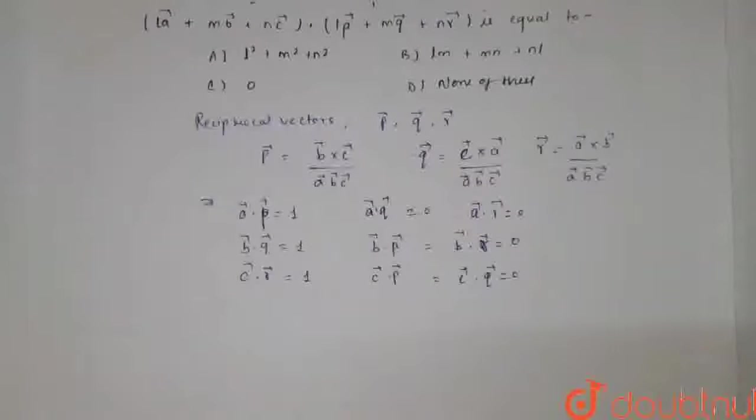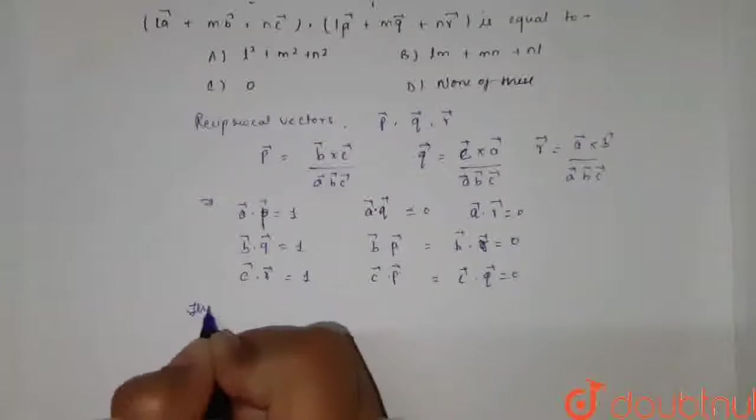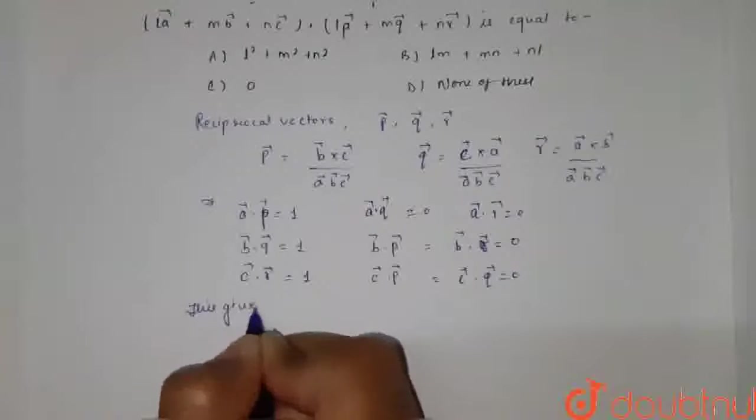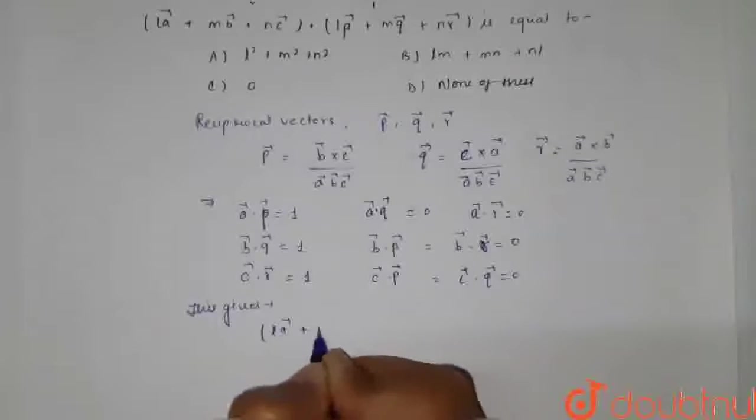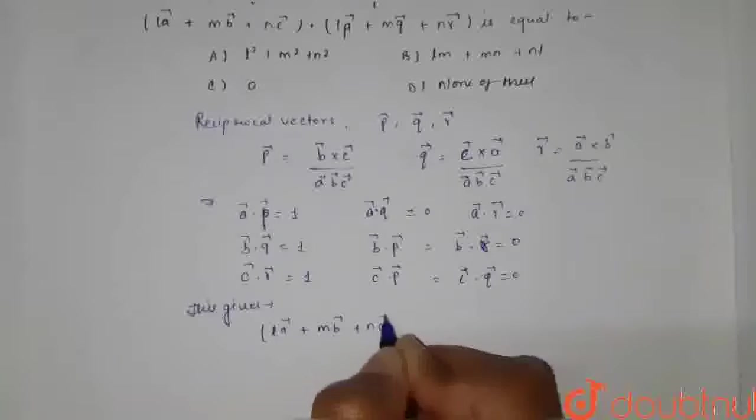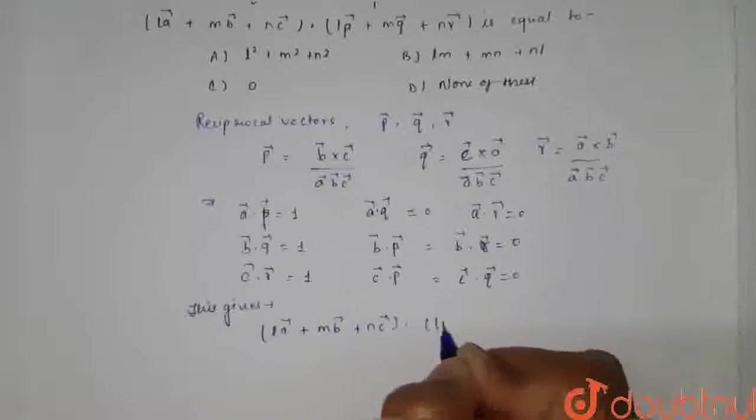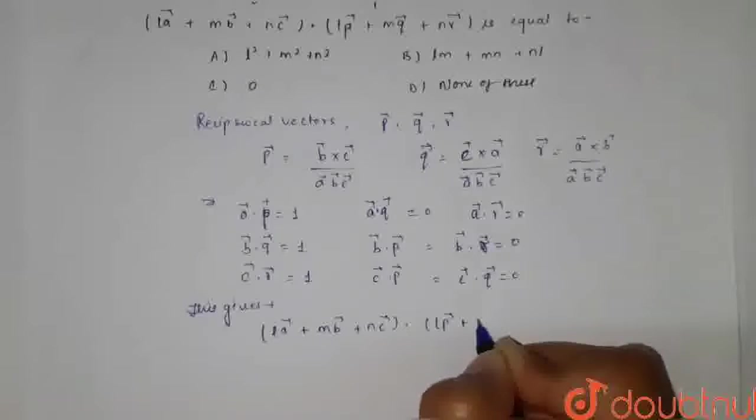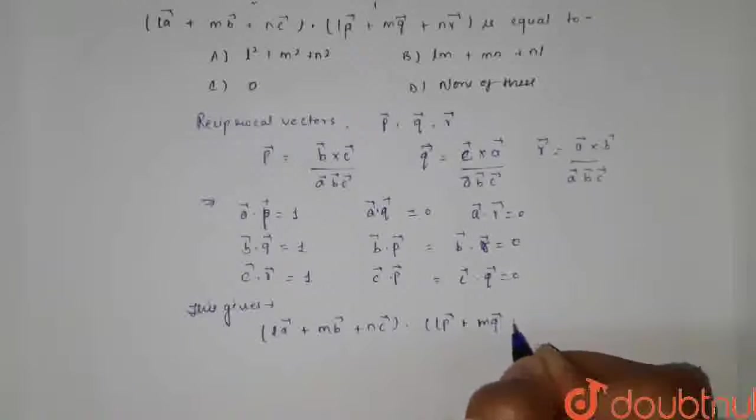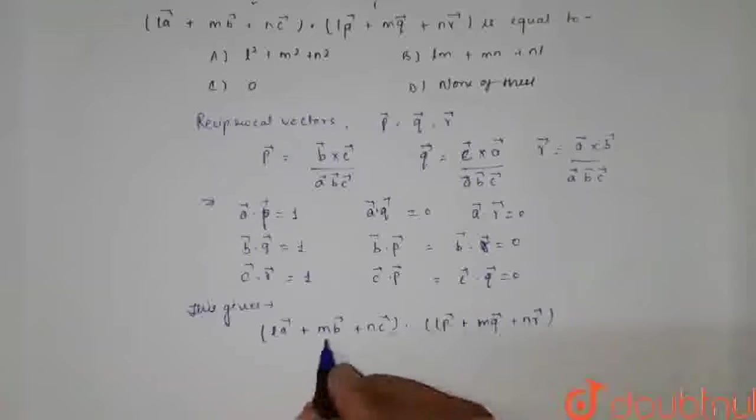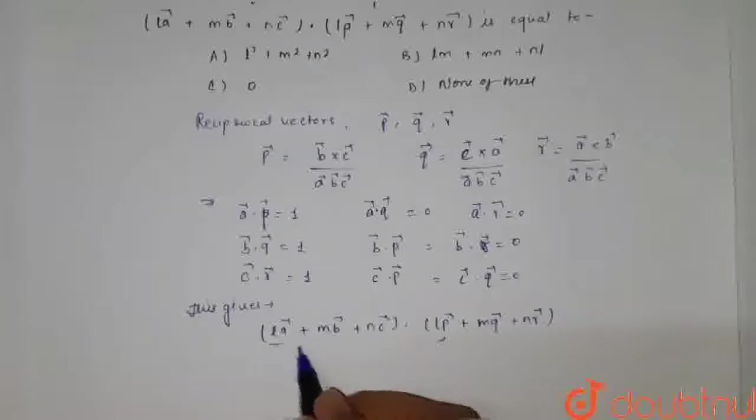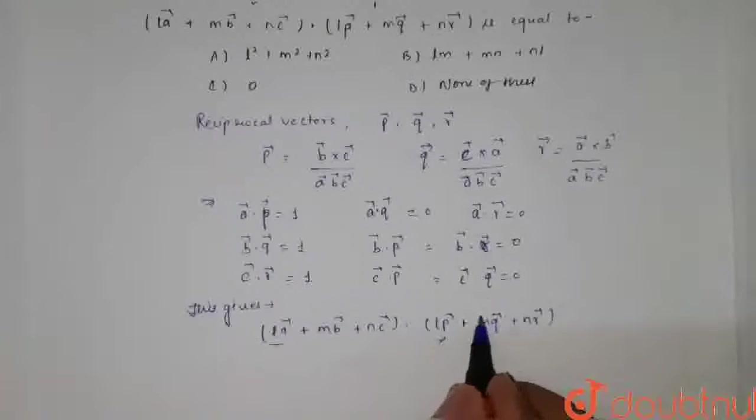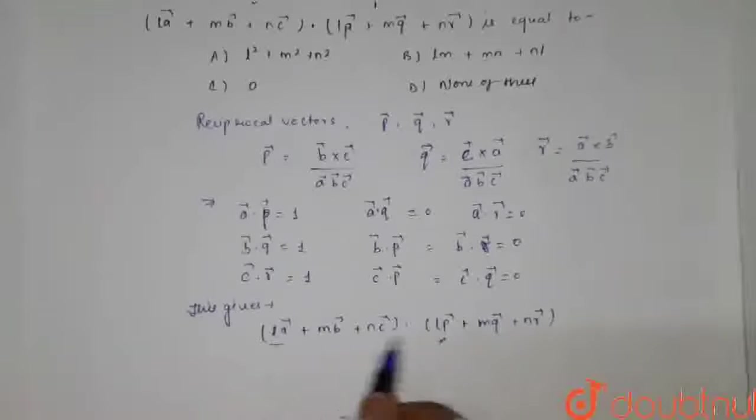Now solving out this question, the question which was given to us was L A vector plus M B vector plus N C vector in product with L P vector plus M Q vector plus N R vector. So this first vector will multiply, get multiplied with this first one.